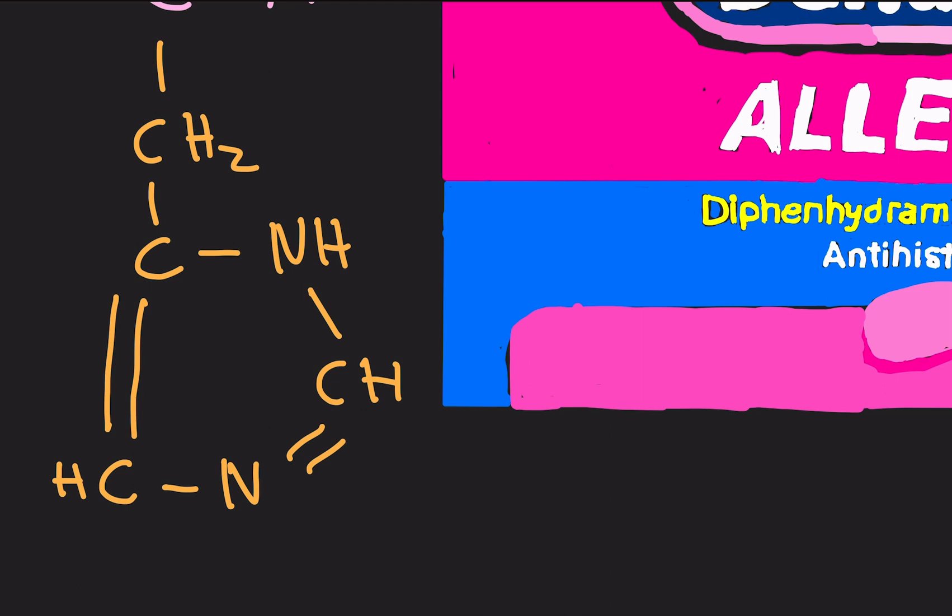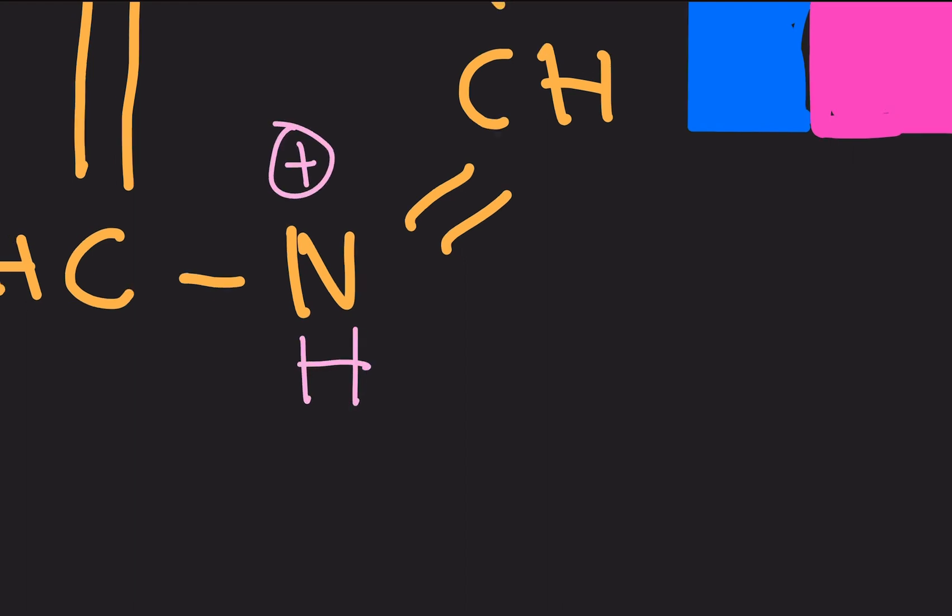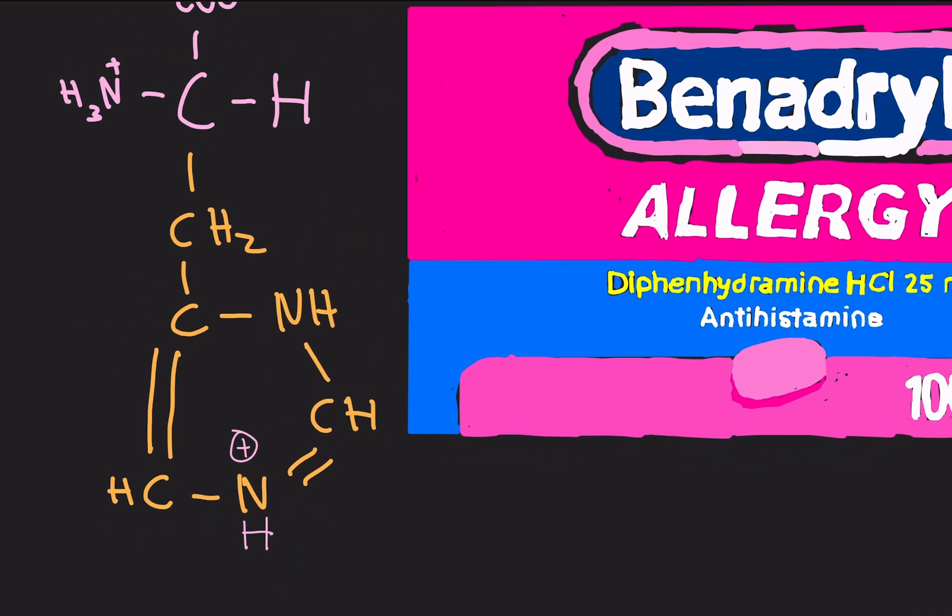Now if you're wondering where is the positive charge - the positive charge exists when this nitrogen is protonated. So if a hydrogen comes and binds to it, now it gets the positive charge. I'm writing this without the positive charge, but if it gets protonated then it gets the positive charge. The nitrogen gets the positive charge.